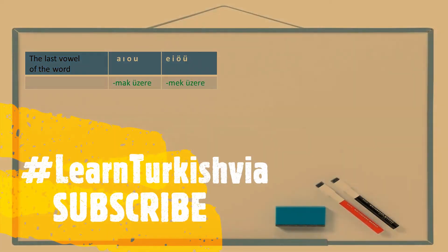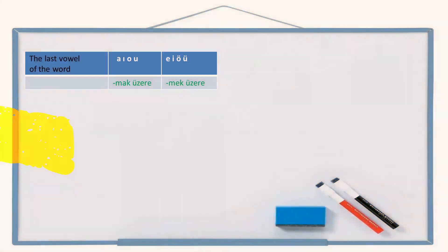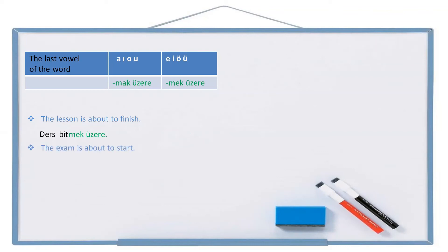And lastly, the suffix mak üzere or mek üzere has another meaning: 'about to.' Let's see that now. The sentence is: The lesson is about to finish. 'About to' is expressed with mak üzere in Turkish. Lesson — ders. Finish — bit. About to finish — bitmek üzere. The lesson is about to finish: Ders bitmek üzere. Another example: The exam is about to start. Exam — sınav. Start — başla. About to start — başlamak üzere. The exam is about to start: Sınav başlamak üzere.